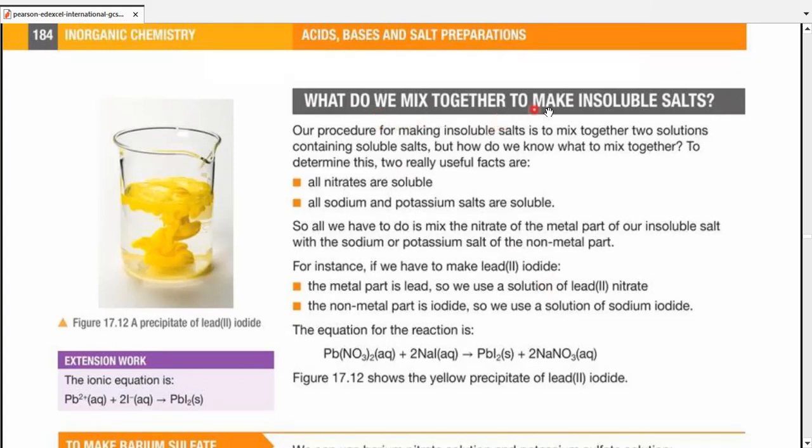What do we mix together to make insoluble salts? Our procedure for making insoluble salts is to mix together two solutions containing soluble salts. But what are we going to mix together? To determine this, there are two really useful facts. All nitrates are soluble. All sodium and potassium salts are soluble. Most ammonium salts are also soluble. So we have to mix the nitrate of the metal part of insoluble salt with the sodium or potassium salt of the non-metal part.